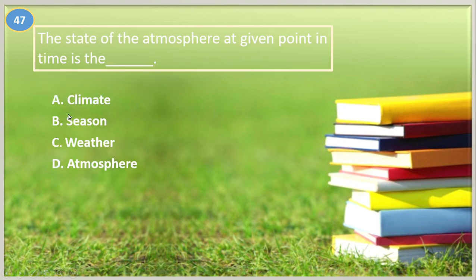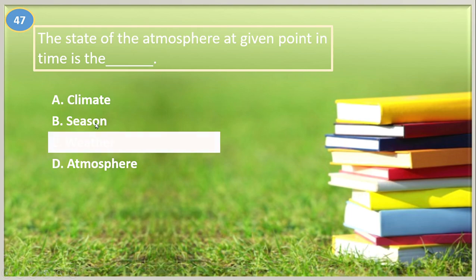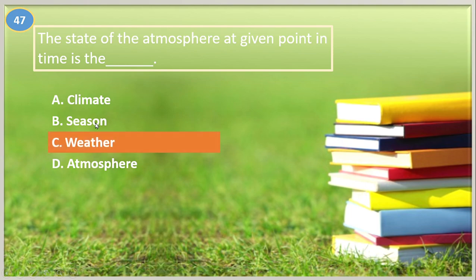Number forty-seven. The state of the atmosphere at a given point in time is the: A. Climate, B. Season, C. Weather, D. Atmosphere. The answer is letter C, Weather.